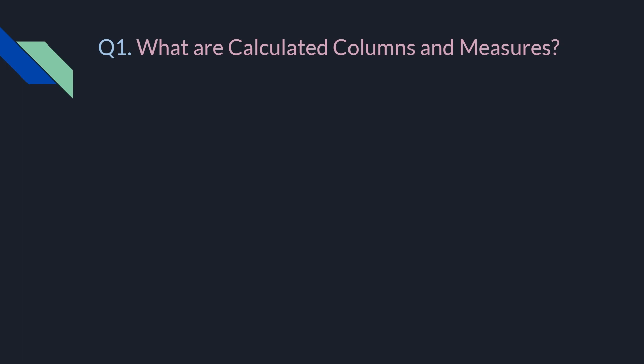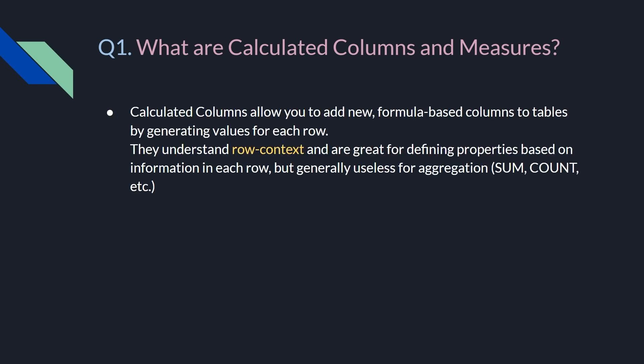The first question which is mostly asked is: what is the difference between calculated columns and measures? Calculated columns allow you to add new formula-based columns to tables by generating values for each row. Calculated columns understand row context and are great for defining properties based on the information present in each row.